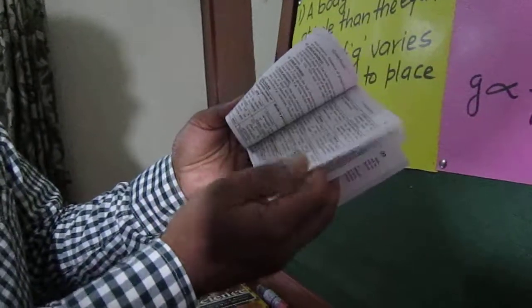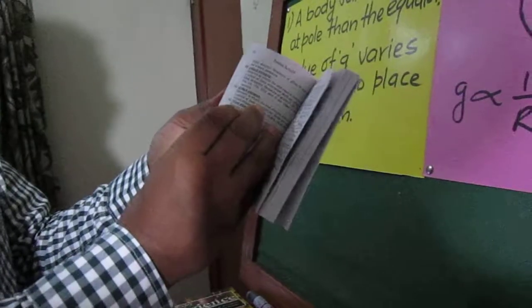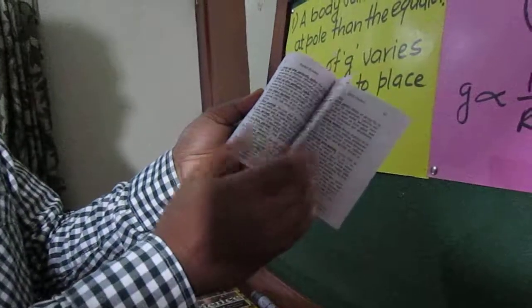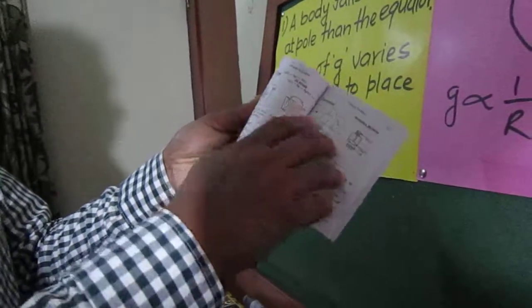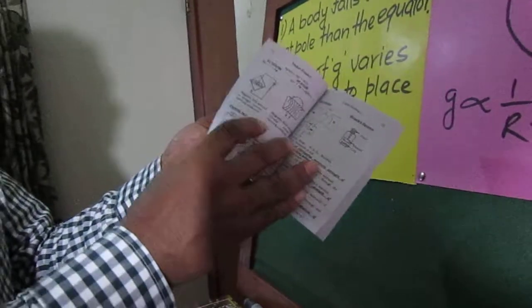And besides chemistry, in physics, in detail every definition, rules, laws, characteristics, etc. Besides that, the diagrams related with electricity.